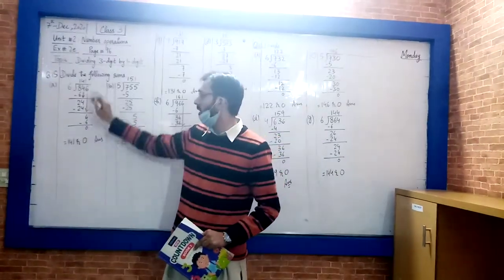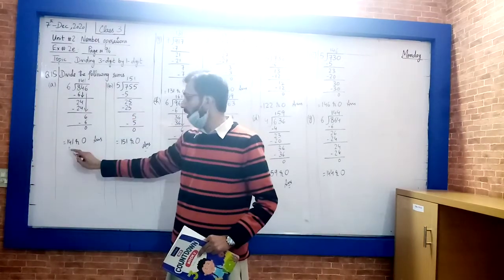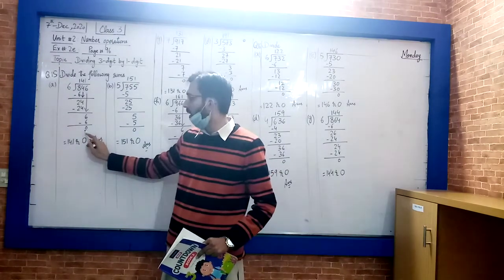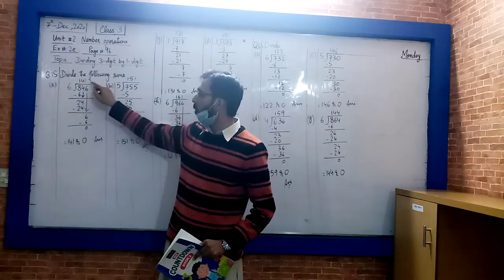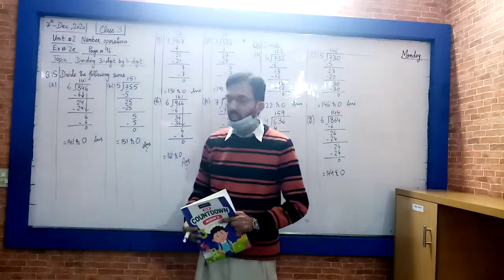Now 6 comes down to this position. 6 divided by 6 is 1. 6 times 1 is 6. Minus is 0. So this is complete. The answer is 141, remainder 0.